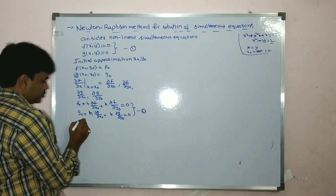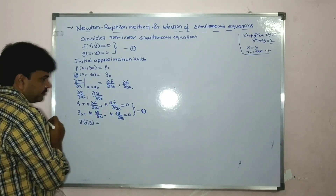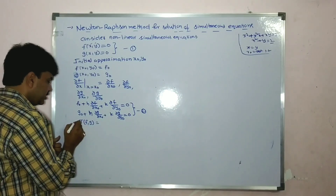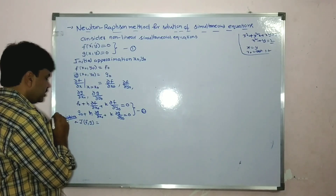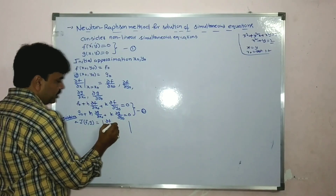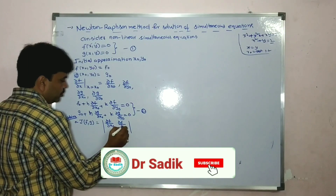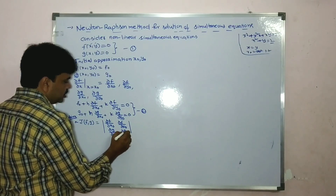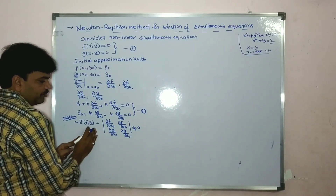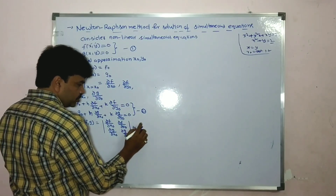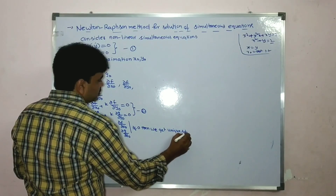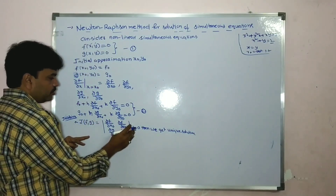Now you check one condition: what is J of f comma g? You already learned in first semester in partial differentiation. J is the Jacobian. Jacobian of f comma g is the determinant of ∂f/∂x₀, ∂f/∂y₀, ∂g/∂x₀, ∂g/∂y₀. You always check this value — it must always be not equal to zero. Then we get a unique solution. When J of f comma g is not equal to zero, we get a unique solution.